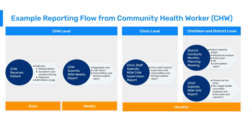The next level up is chiefdom or district level. Districts conduct monthly planning meetings where they look at performance over time, key indicators, data quality assessments, available commodity reports, and supply chain issues — using all of this data to come up with action plans. Ideally, they submit those action plans to a higher level — regional, province, or national — and best practice is also to submit those action plans back down to the facility and community health worker level, so there is good transparency on what the district plans to do at all levels.